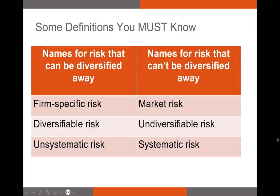Before going further, I want to clarify some definitions. In the real world you'll hear several terms that are synonymous with each type of risk. On the firm-specific side, you'll also hear 'diversifiable risk' — because it's the risk you can diversify away — and 'unsystematic risk.' For market risk, the three main synonymous terms are: market risk, undiversifiable risk (because you can't diversify it away), and systematic risk (because it's always present in the market). You will hear all of these terms in your career.